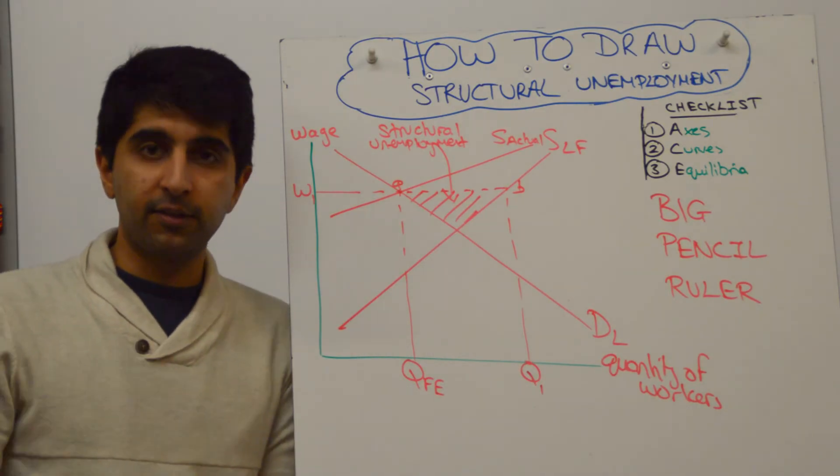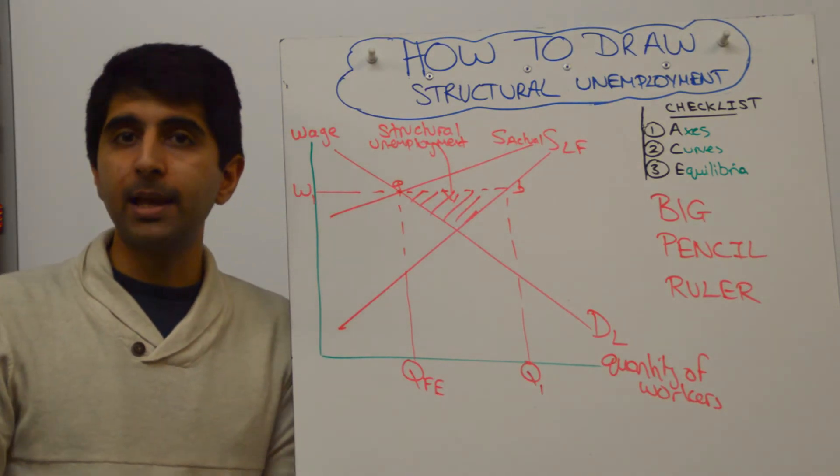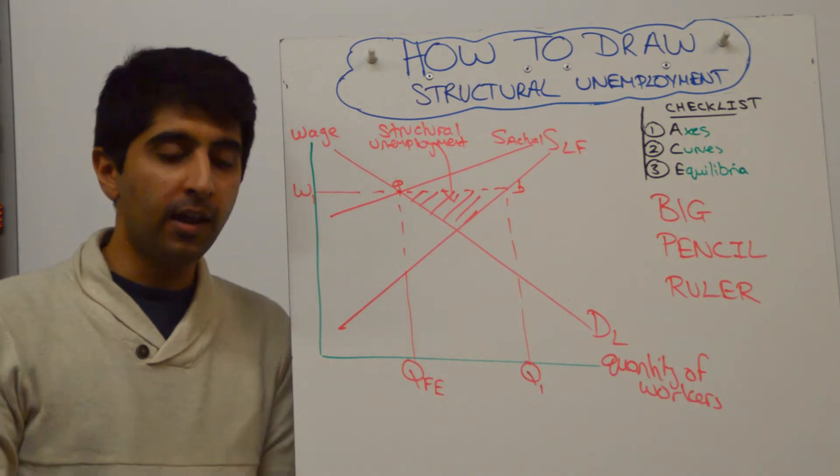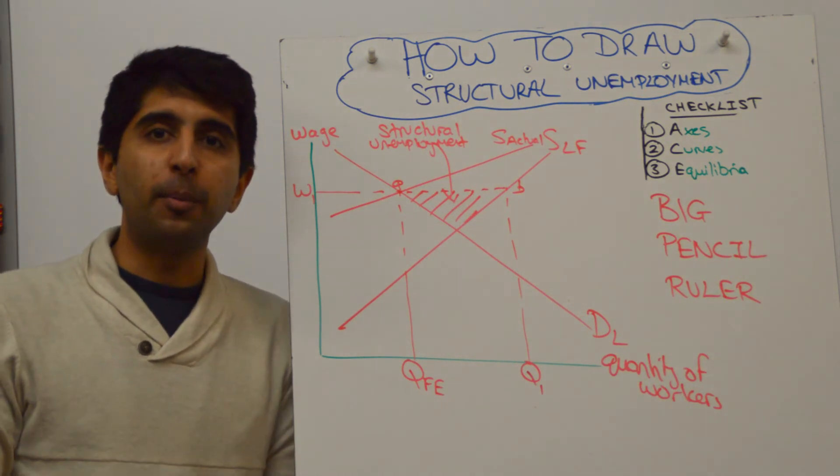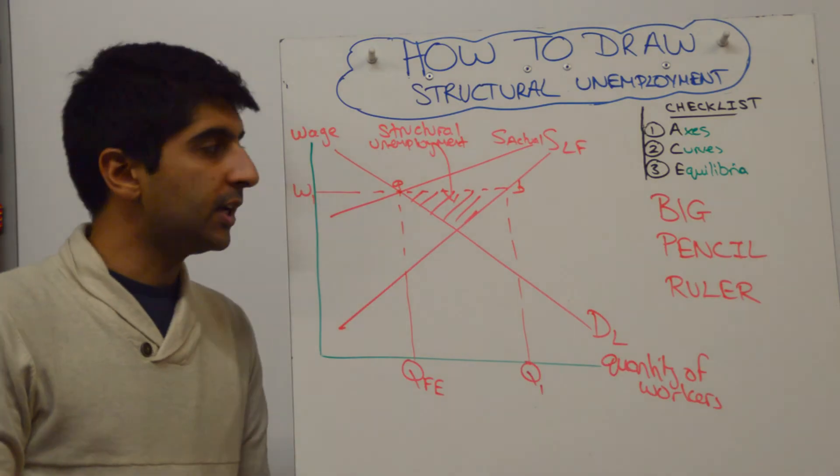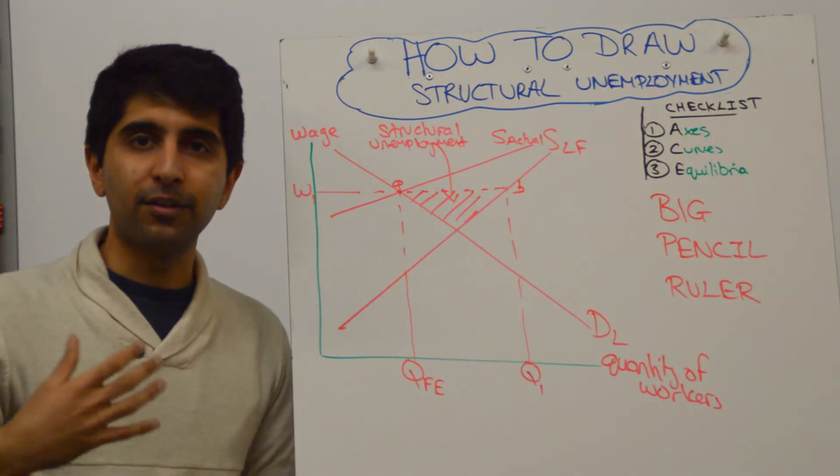Maybe they reject the job because they are immobile, they are geographically immobile, they don't want to move to a certain location. Maybe they can't take the job because they don't have the skills, right? So they want it, but they can't take it because they don't have the skill.